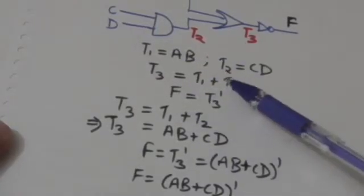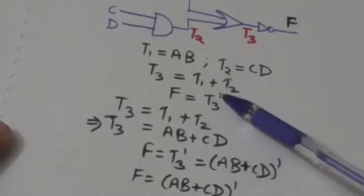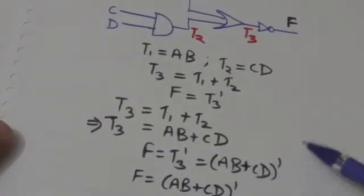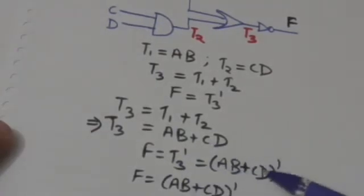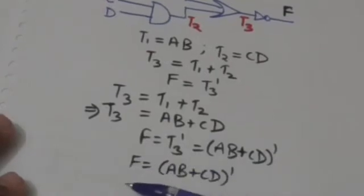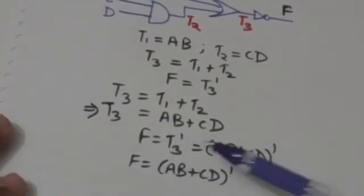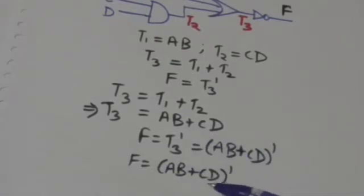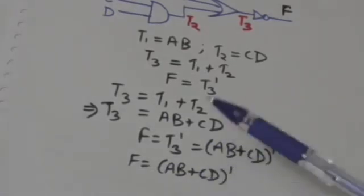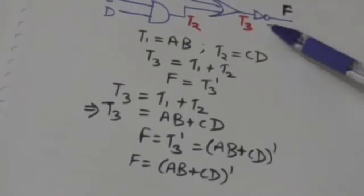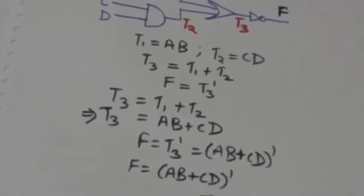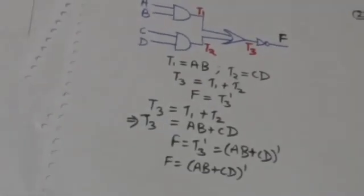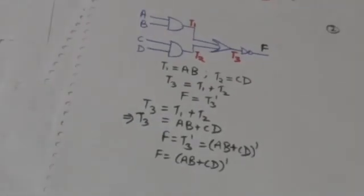Since F equals the complement of T3 and T3 equals AB plus CD, we get F equals the complement of (AB plus CD). This is the required boolean function for output variable F in terms of input variables A, B, C, and D. Thank you very much.